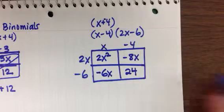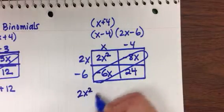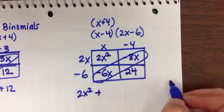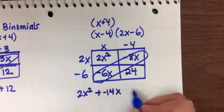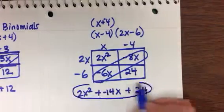Again, I look to combine like terms. I have two terms that can be combined. The 2x squared stands alone. Negative 8x plus negative 6x is negative 14x. So 2x squared minus 14x plus 24, and I have completed the problem.